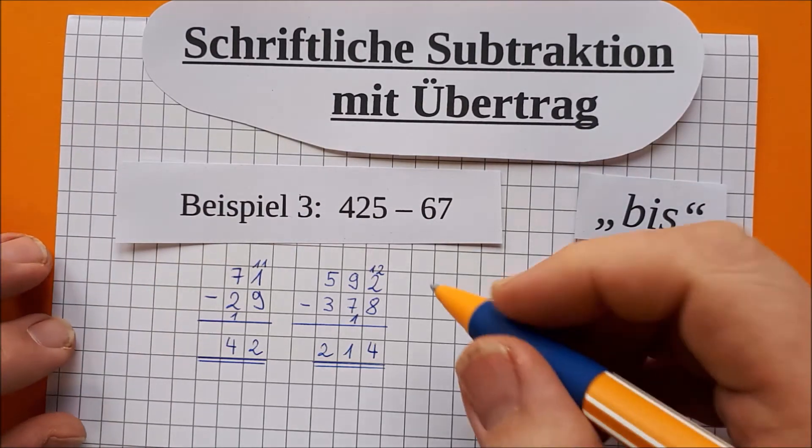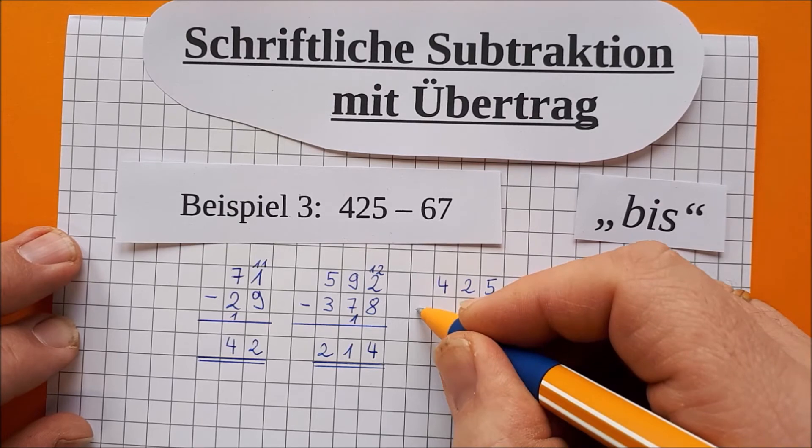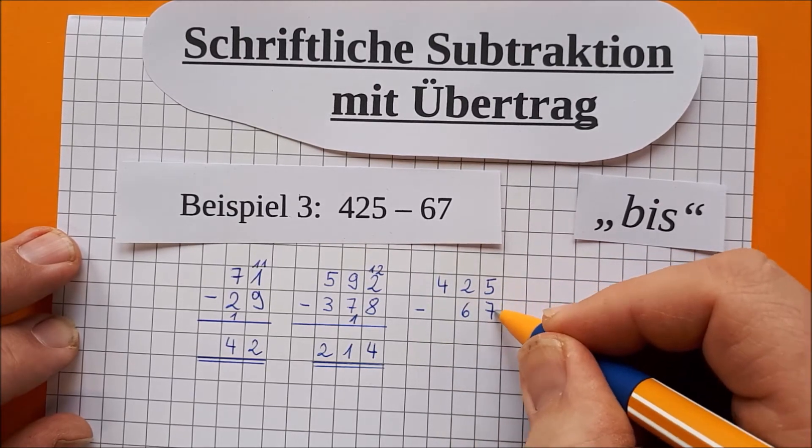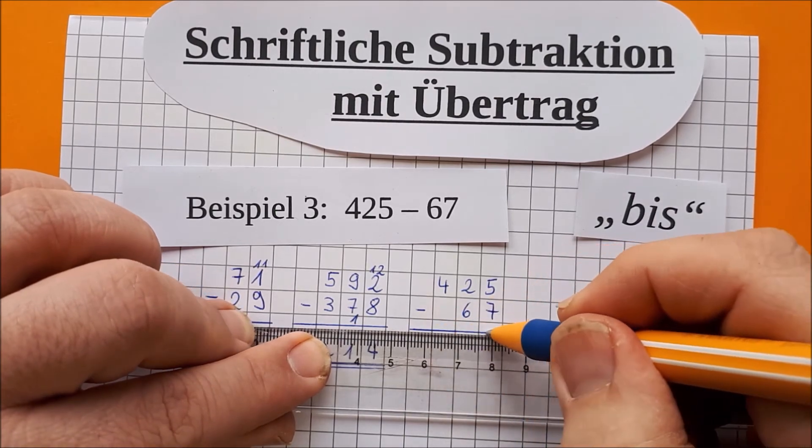Beispielaufgabe Nummer 3. 425 minus 67. Strich drunter, da wo er hingehört. In die Mitte der Kästchenreihe nämlich. So.